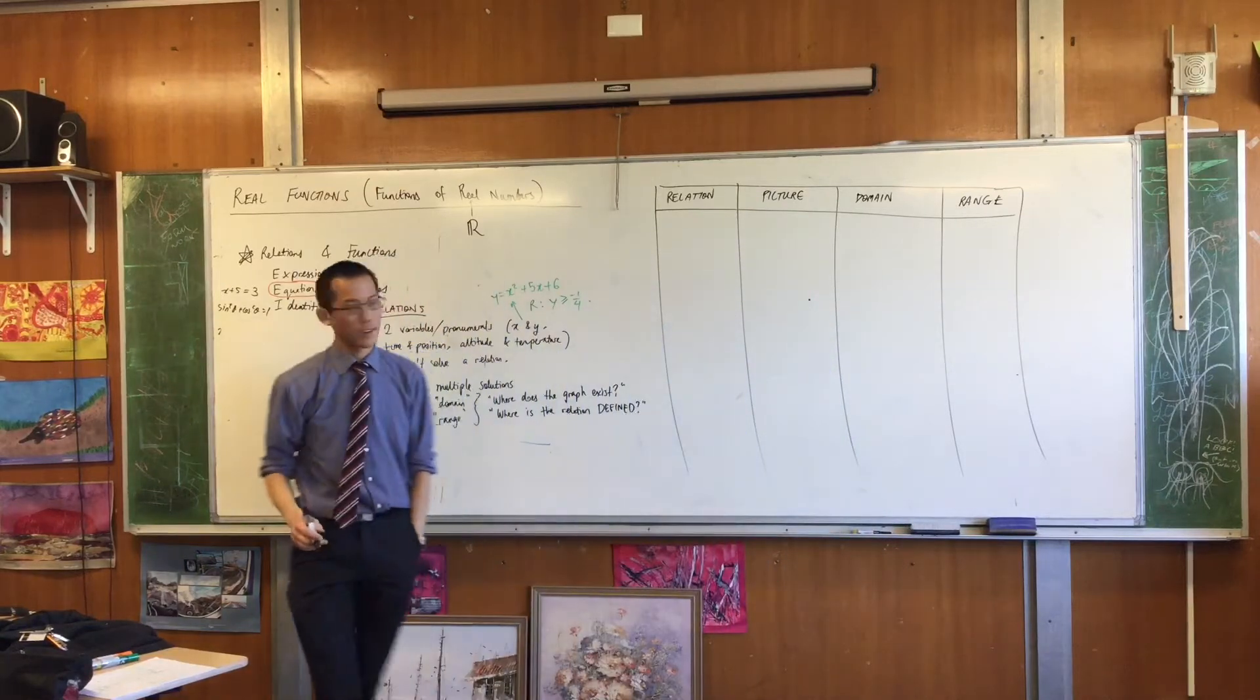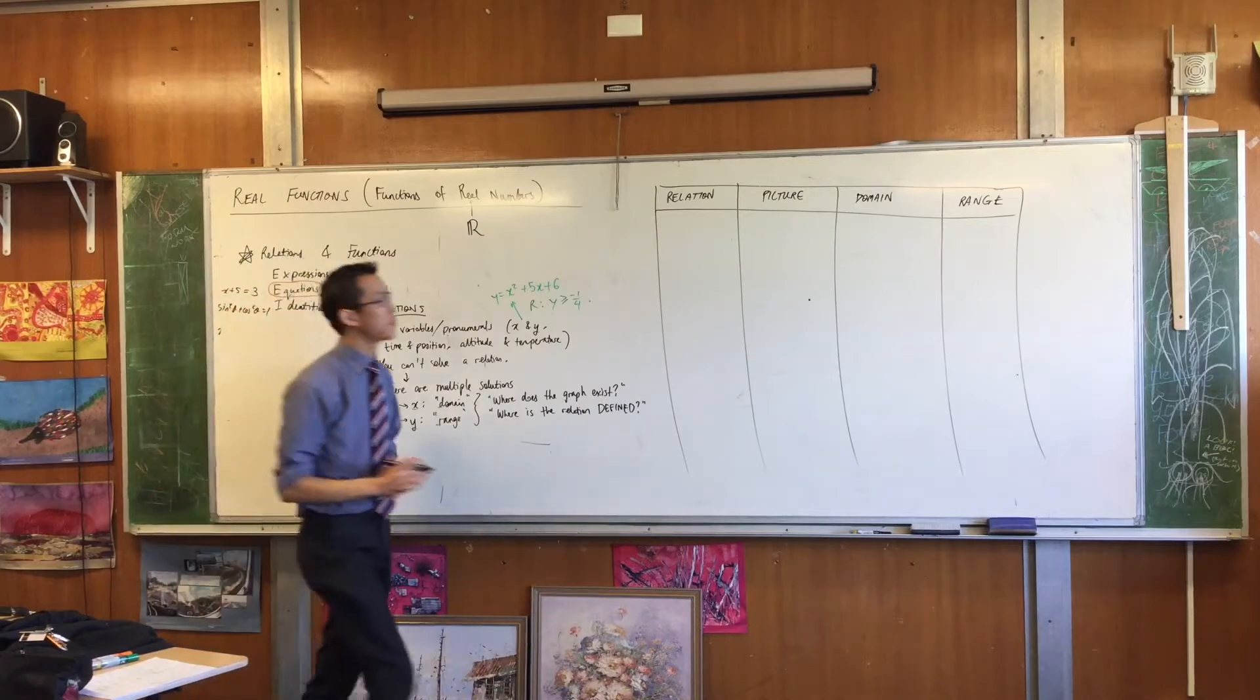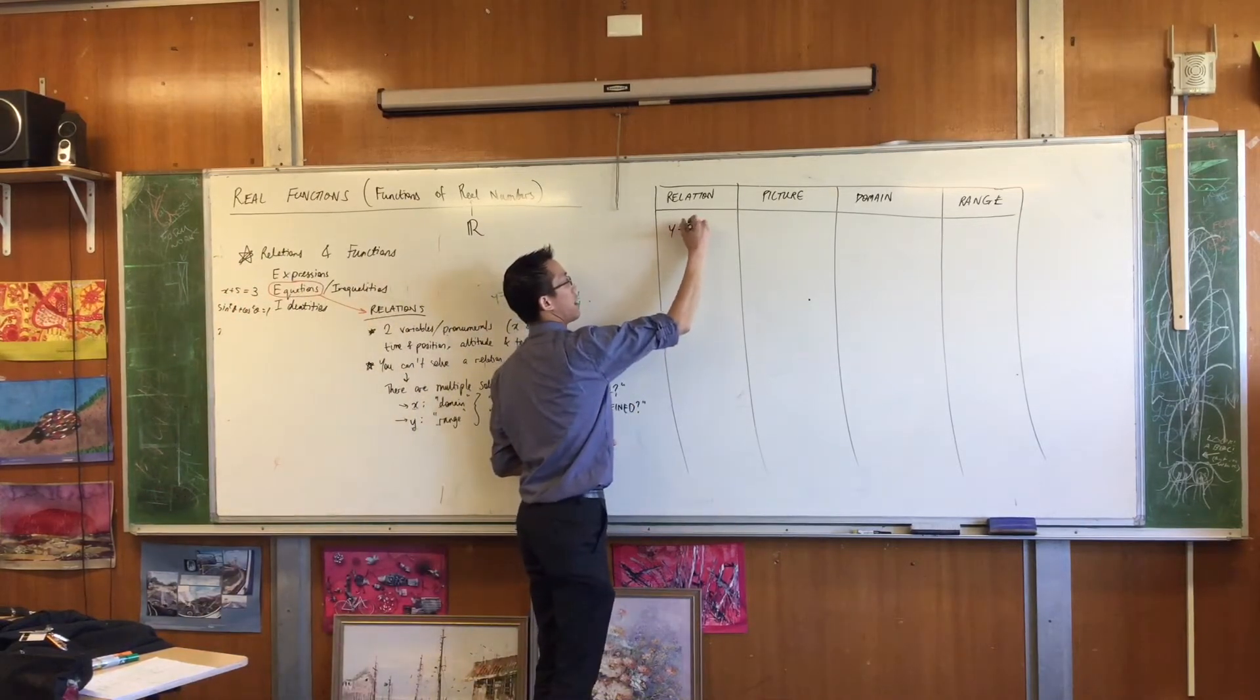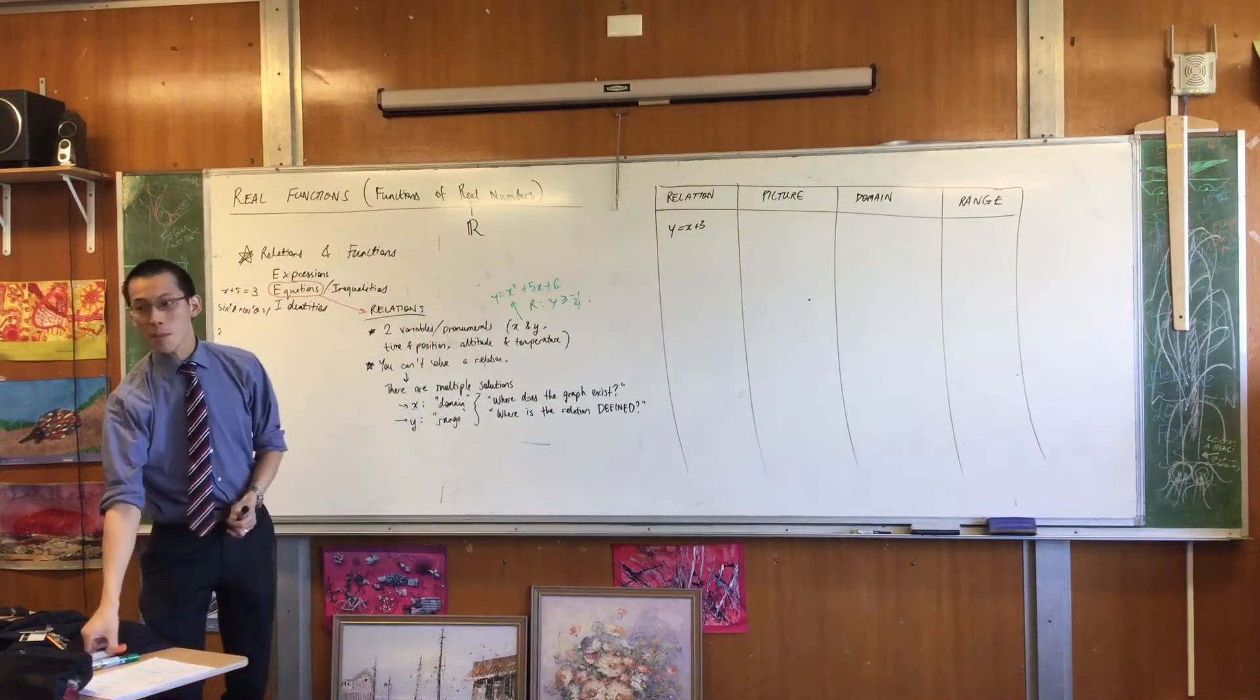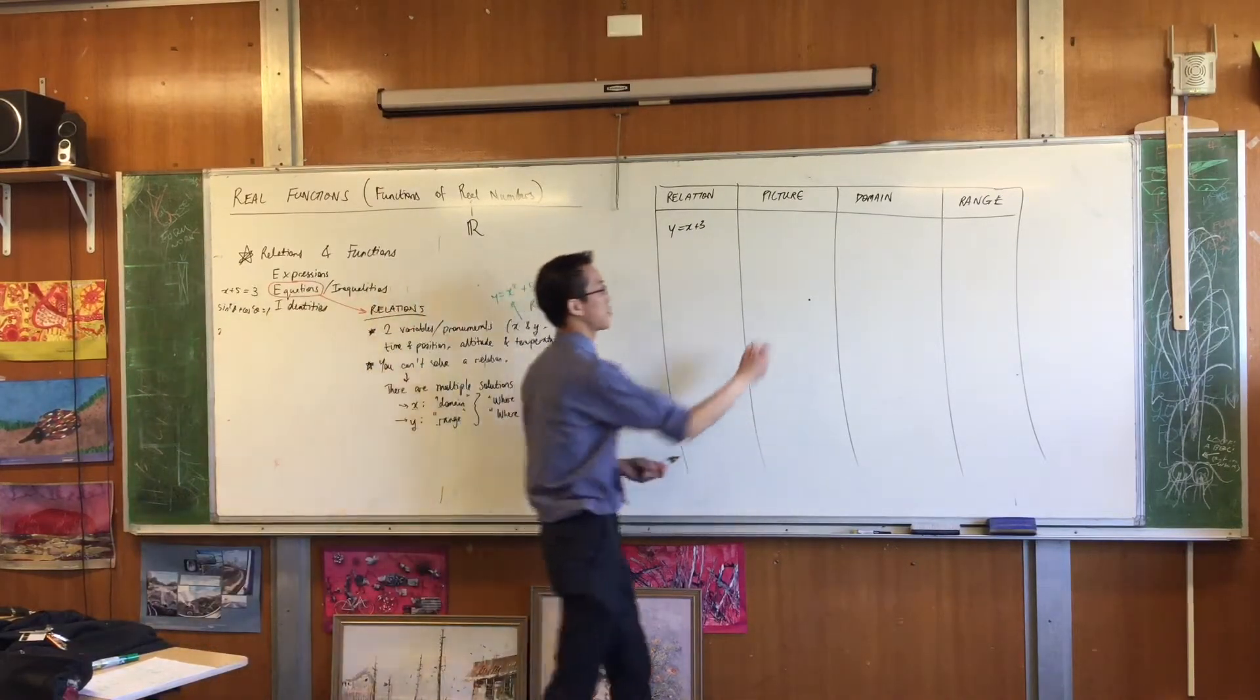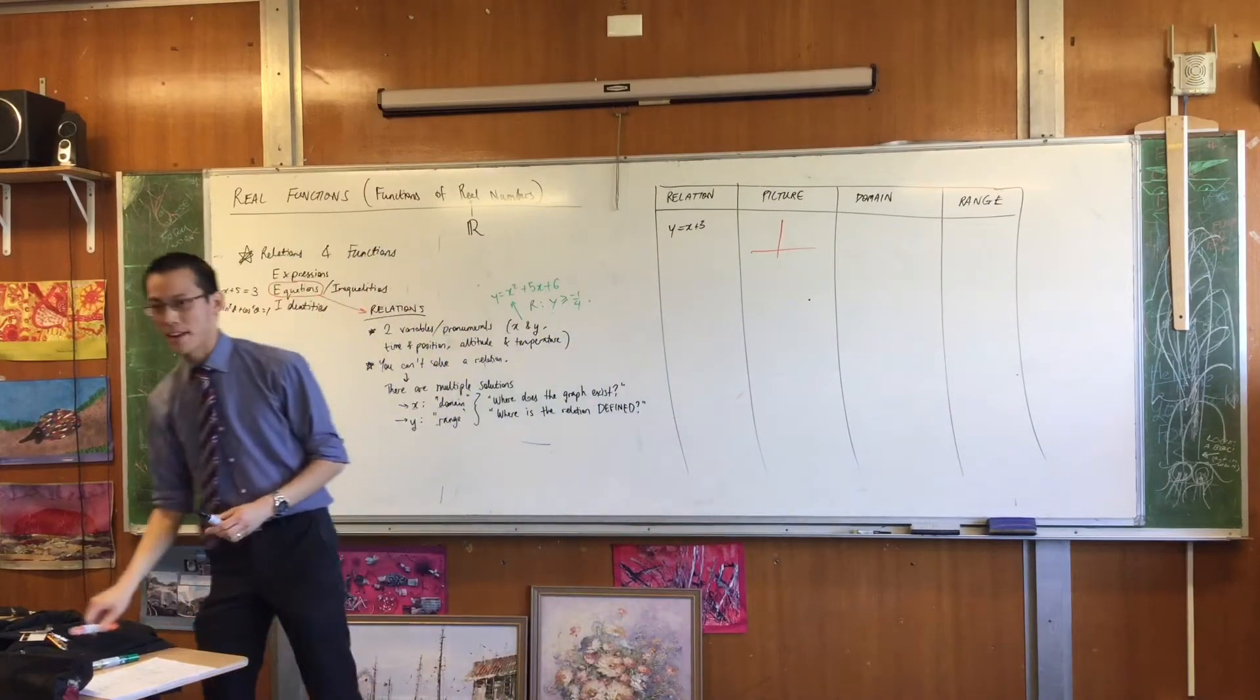So here we go for columns. Let's explore this in a little more of a systematic way. We'll start with something simple. Y equals x plus 3. So these are all examples. Here we go. What does y equals x plus 3 look like? Come on we just came out of this topic.